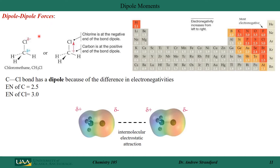Let's review dipole moments. In chloromethane, carbon has a partial positive charge and chlorine has a partial negative charge, because chlorine has a larger electronegativity than carbon. Another way to represent this is with an arrow — the cross at the bottom is the positive side and the arrowhead is the negative side. Looking at an electrostatic map, the red region implies partial negative and the blue-green region signifies partial positive. This is an intermolecular electrostatic attraction between molecules with opposing dipoles facing each other.